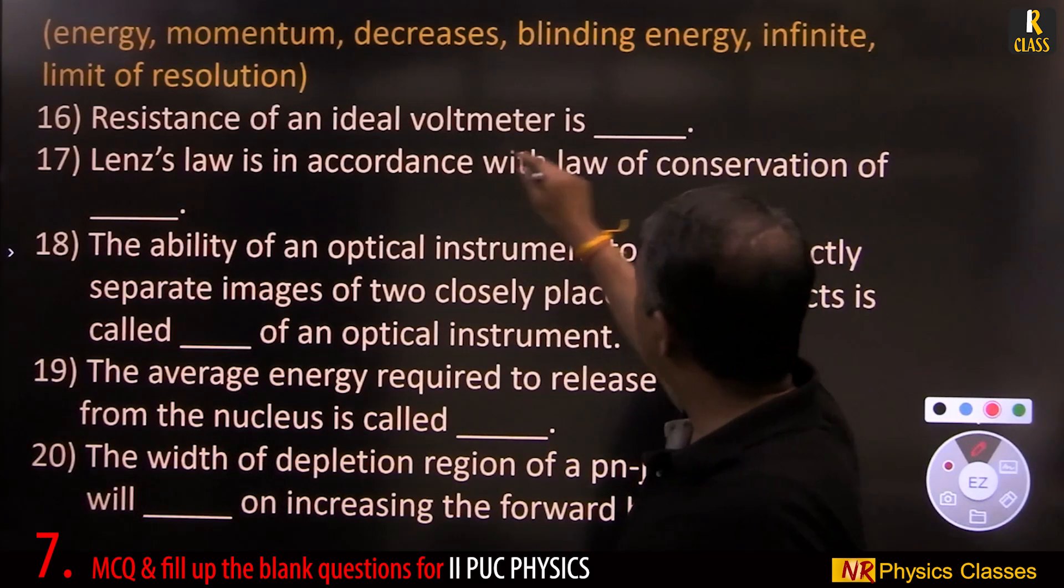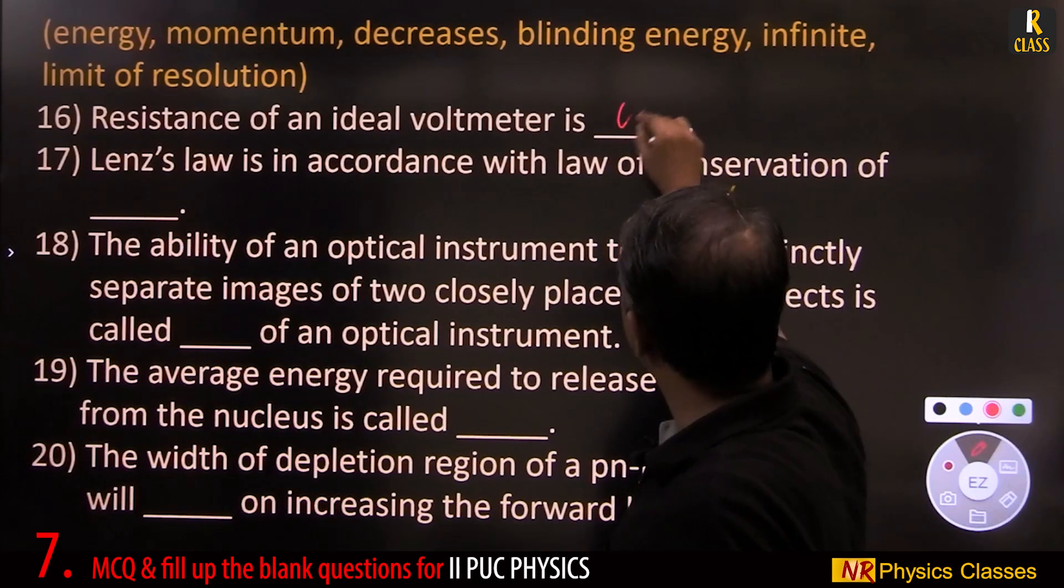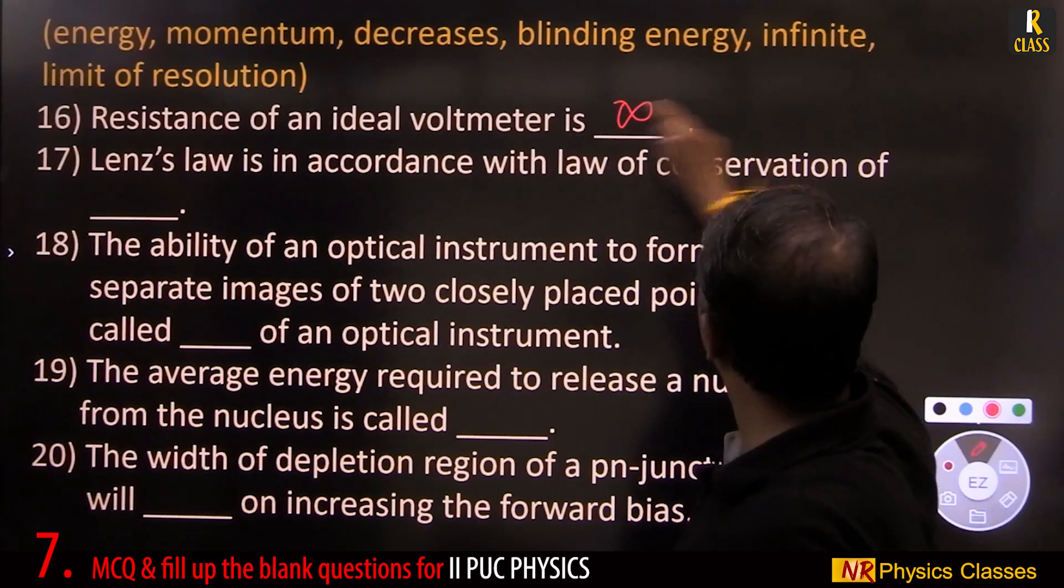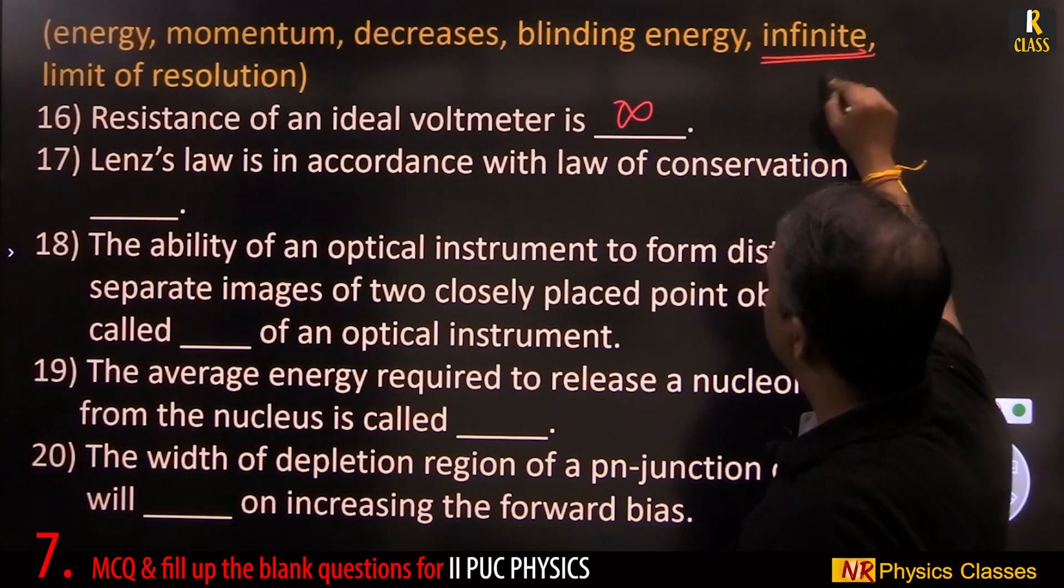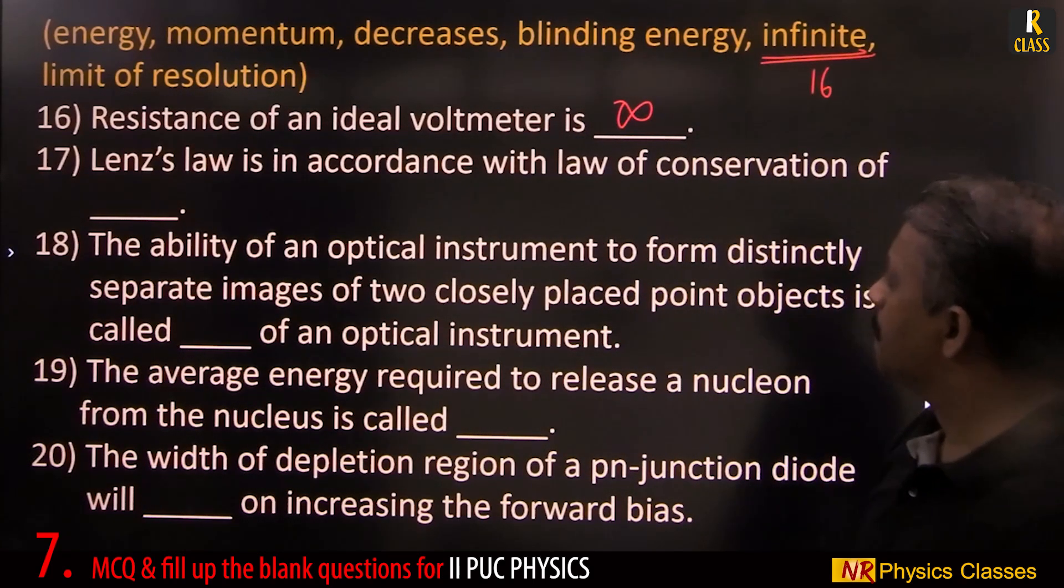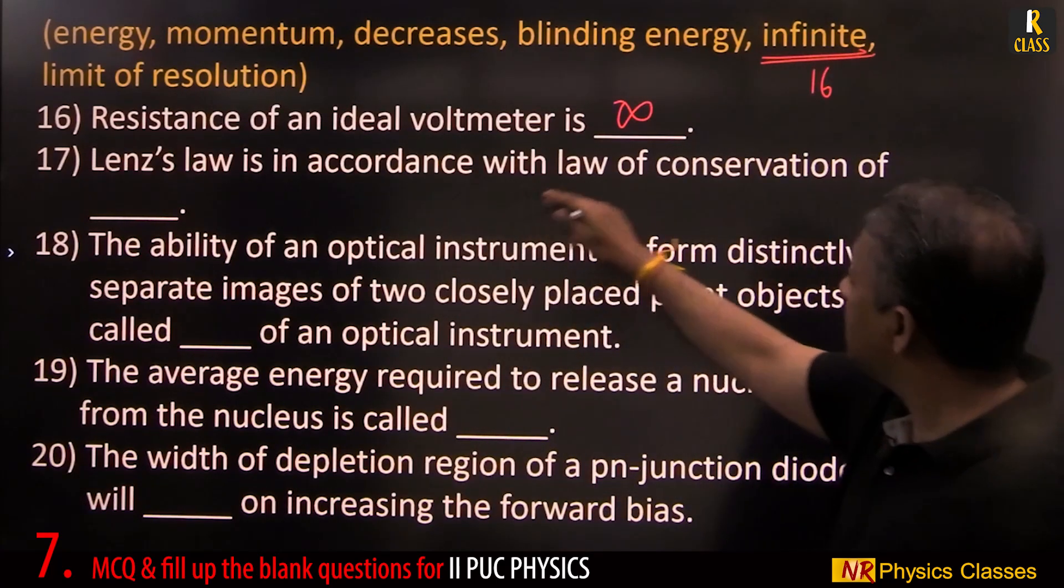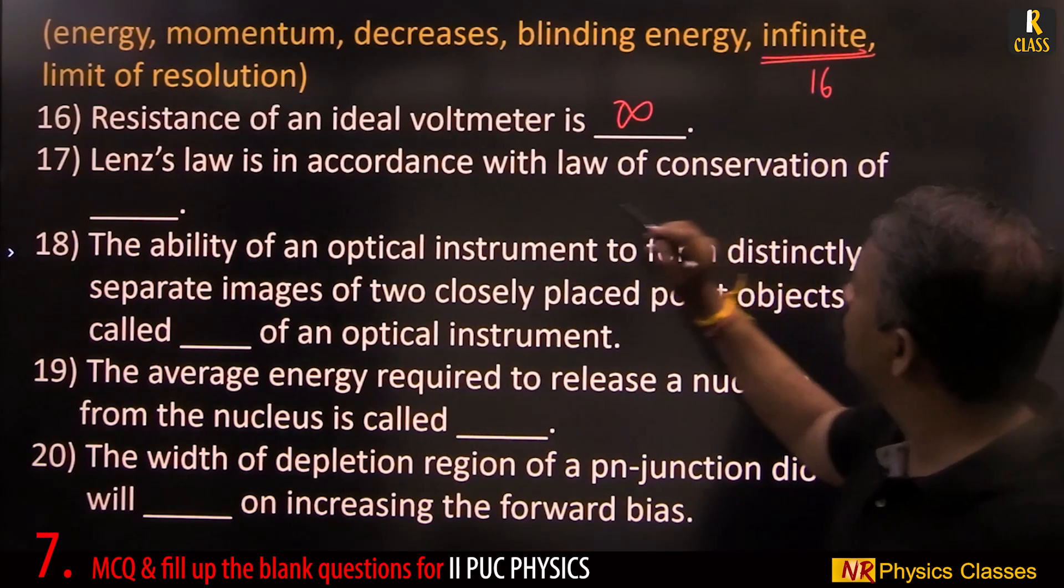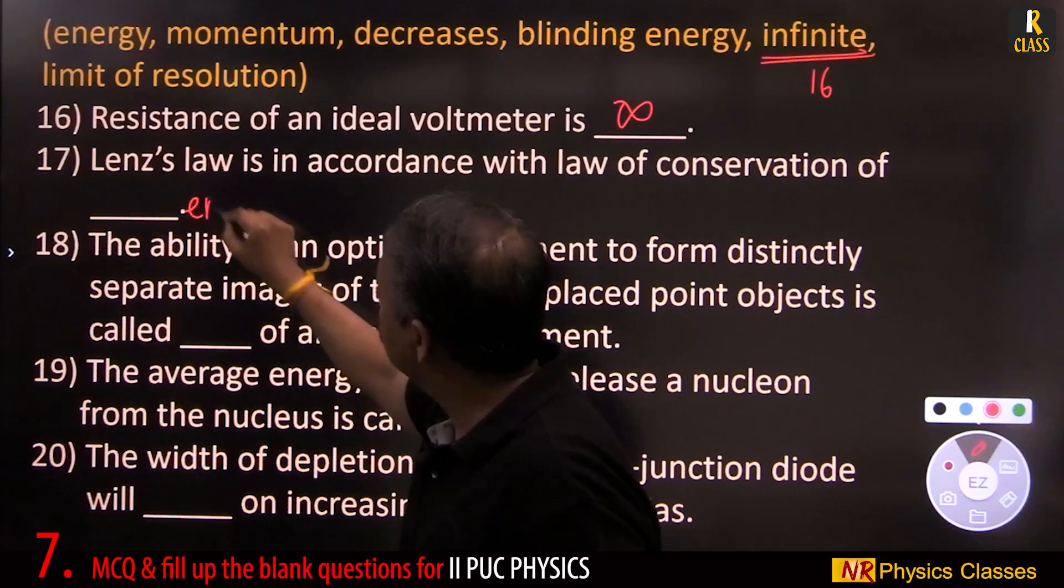Resistance of an ideal voltmeter is infinity. This is sixteenth question. Lenz's law is in accordance with the law of conservation of energy.